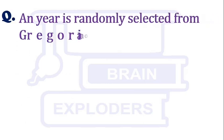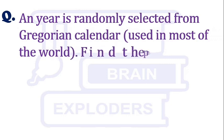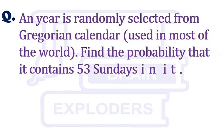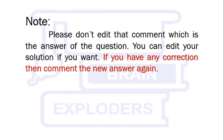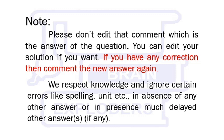Let's move to our another question. An year is randomly selected from the Gregorian calendar. Find the probability that it contains 53 Sundays in it. Try this question and comment us the solution, and if you have any question like this then please share with us.